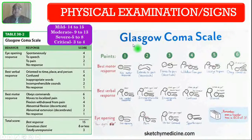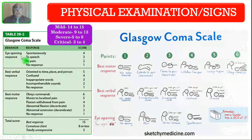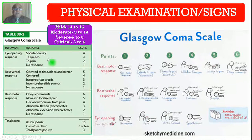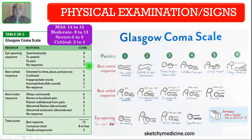In the physical examination, you must perform the Glasgow Coma Scale. For eye opening, there are four levels: if the patient opens eyes spontaneously, the score is 4; responding only to speech scores 3; responding to pain scores 2; no response scores 1.